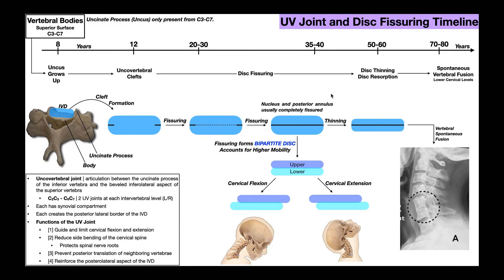Returning to the timeline: disc fissuring takes place from about age 20 to 40, creating the bipartite disc. Once we get into middle age — around 50 to 60 years old — we see thinning of the intervertebral disc, disc resorption, and disc dehydration. The disc must contain a lot of water to remain plump; dehydration causes thinning, and while normal dehydration is reversible, in the 50s and 60s the disc actually thins independently of dehydration as some disc material is resorbed.